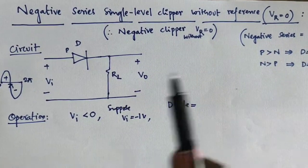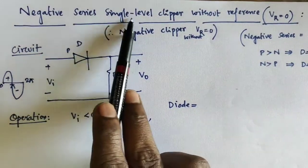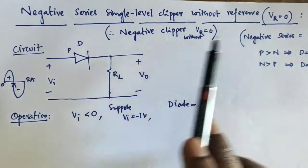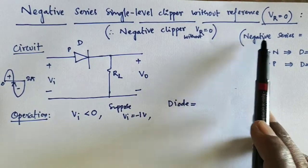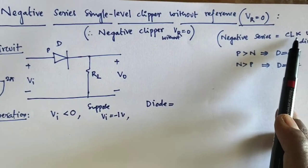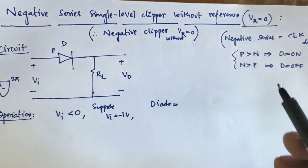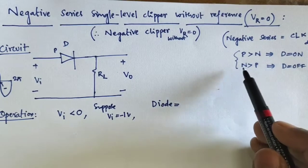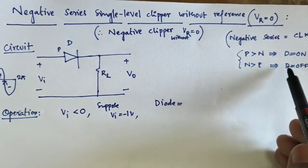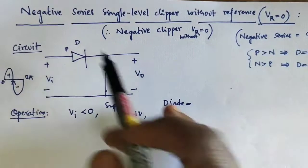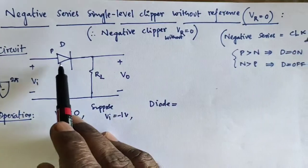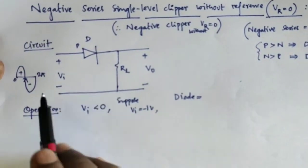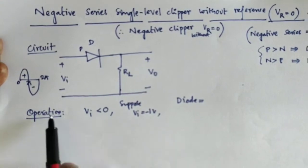We are going to discuss the concept of negative series single-level clipper without reference, where the reference value VR is 0. In series connection, we take a negative diode in the clockwise direction. One condition is that compared to the N-side value, the P-side value is greater — so when P is greater than N, the diode is in the on state; when N is greater than P, the diode is in the off state. The reference value is 0, so no need to take any separate reference value.